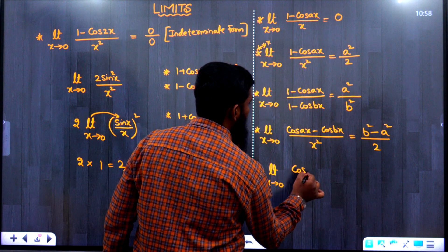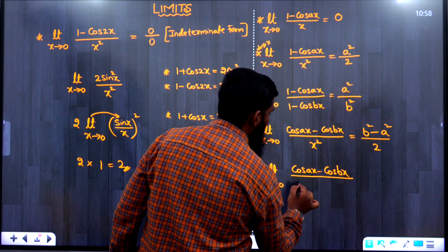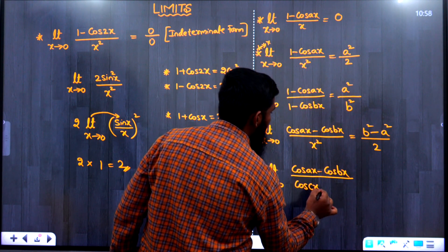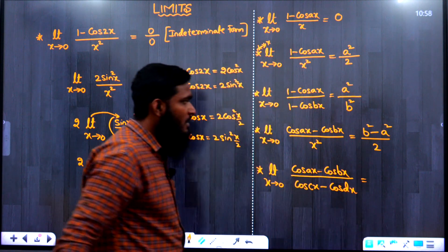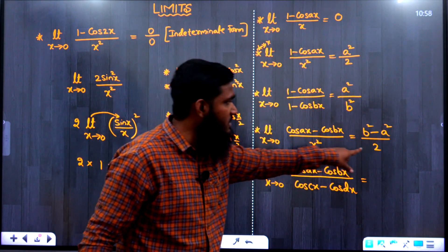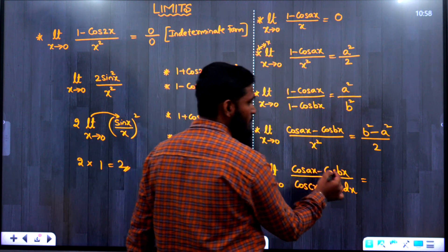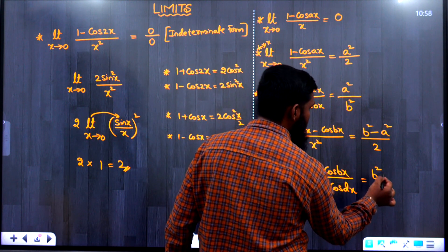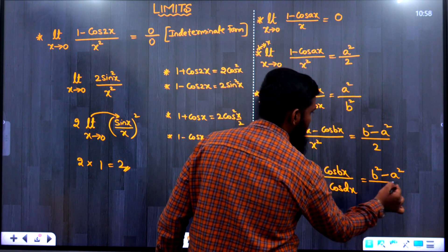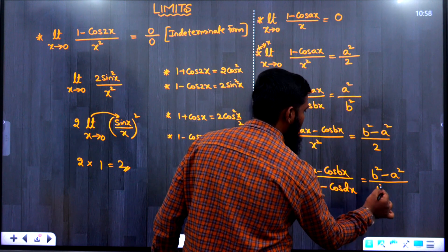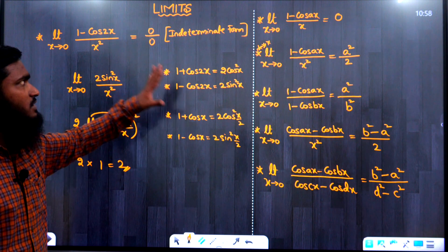Last formula: limit x→0 of (cos ax − cos bx)/(cos cx − cos dx). Here there is no x² in the denominator, so we do not divide by 2. We just write the squared values directly: (b² − a²)/(d² − c²). These are all the formulas for this concept.